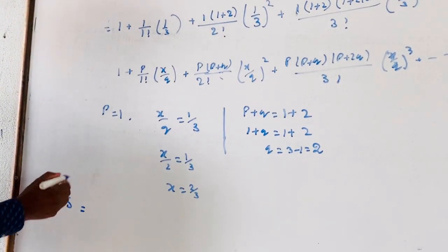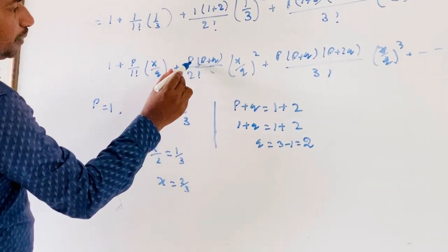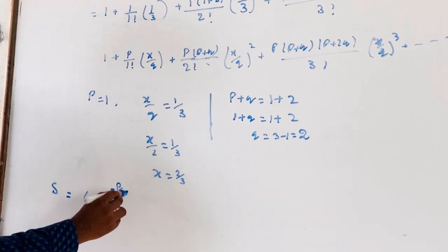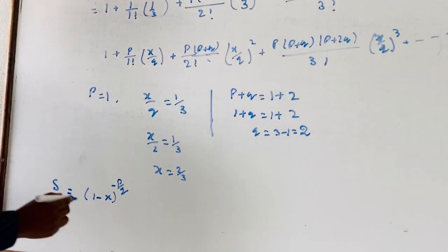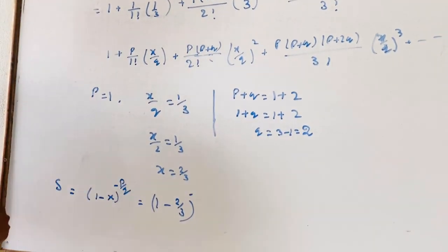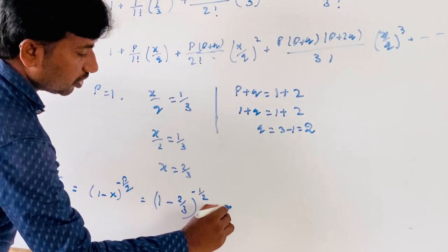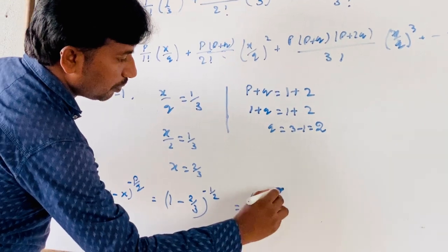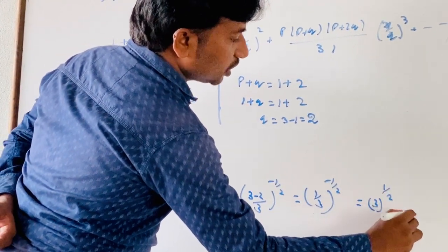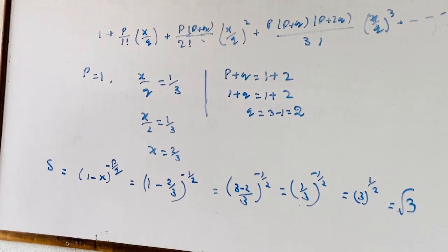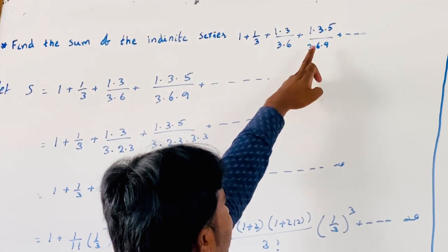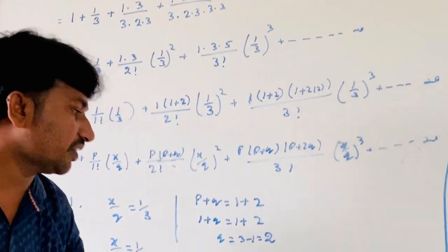Now S equals the sum of the series, which by the formula equals (1 − x)^(−p/q). That is (1 − 2/3)^(−1/2) = (1/3)^(−1/2) = 3^(1/2) = √3. So the sum of 1 + 1/3 + (1·3)/(3·6) + (1·3·5)/(3·6·9) + ... to infinity equals √3.